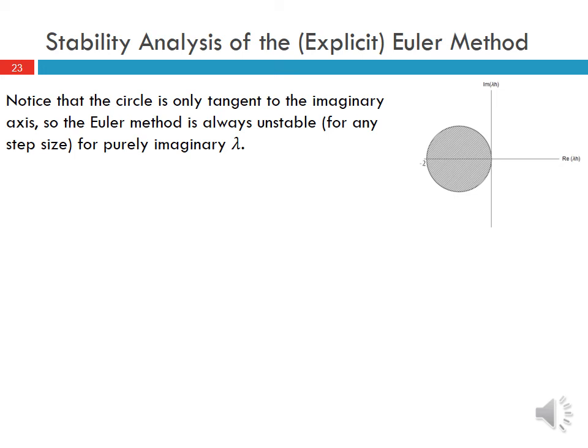We can notice that the circle is only tangent to the imaginary axis. This means that if λ is purely imaginary — with no real part — the Euler method is always unstable. For any step size h, we cannot choose an h that puts λh inside that circle. So the explicit Euler method does not work for oscillatory solutions with purely imaginary λ.